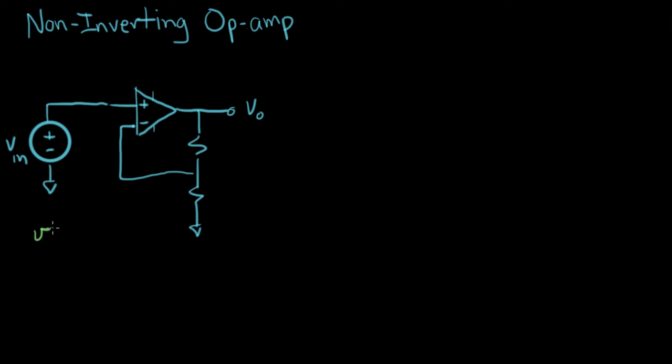We know that V out equals some gain, a big number, times V plus minus V minus. And let's label that. V plus is this point right here, and V minus is this point right here.